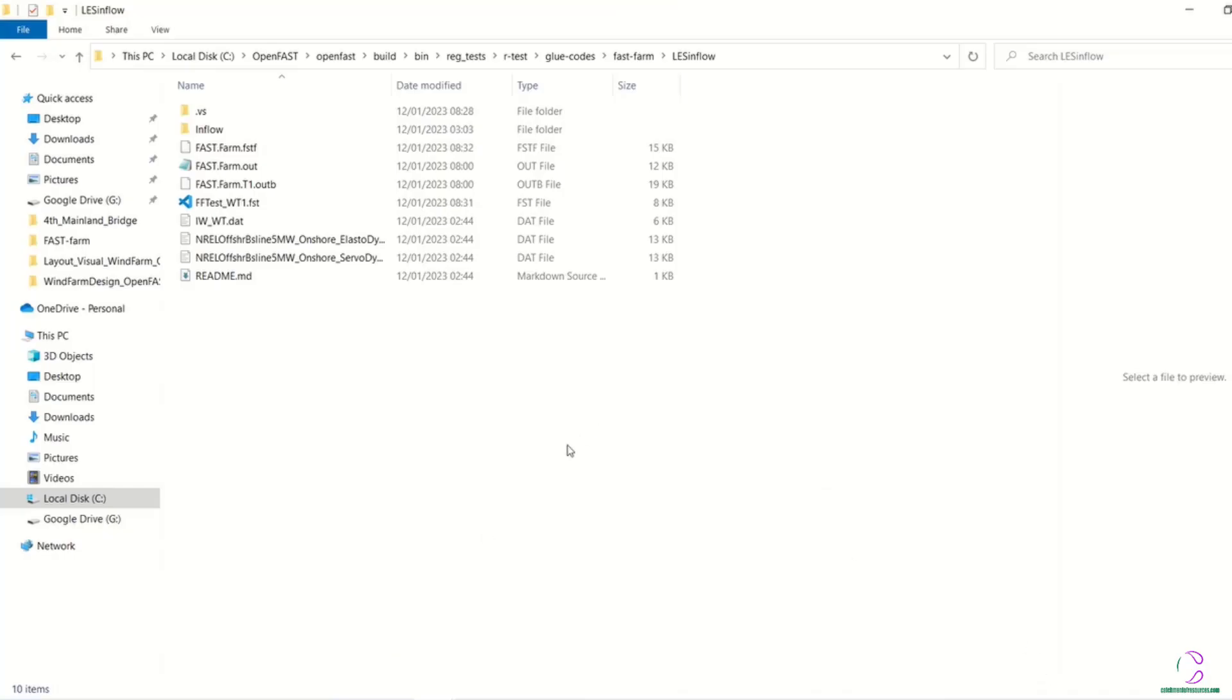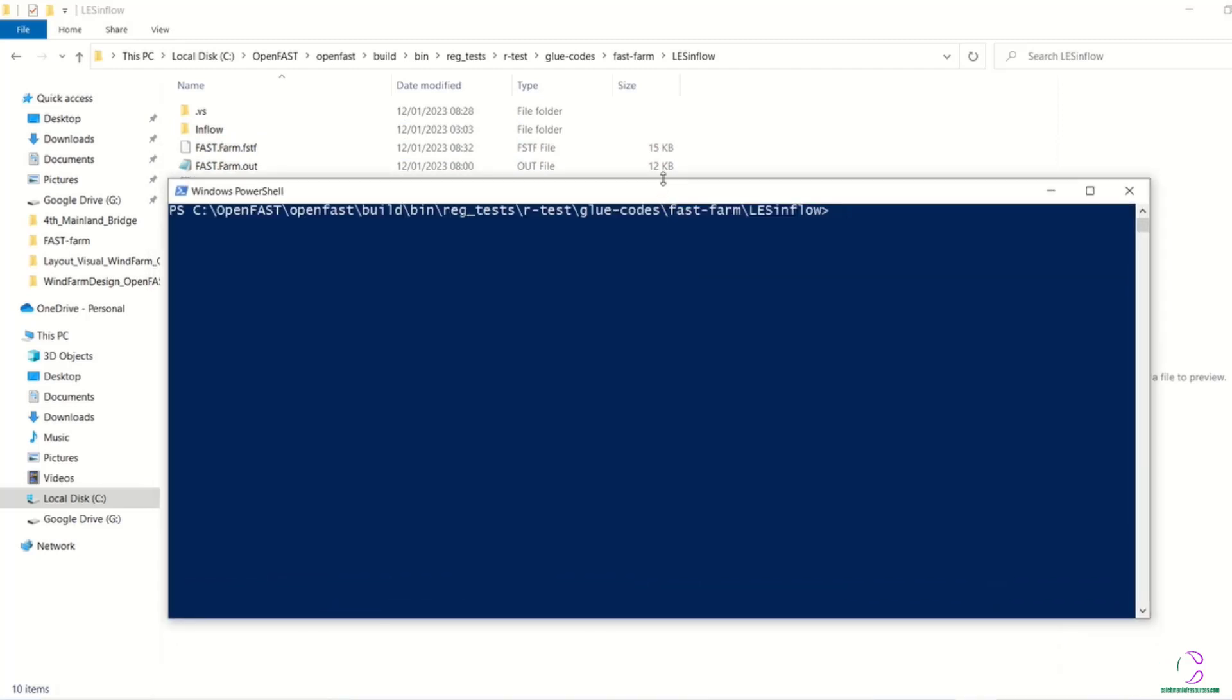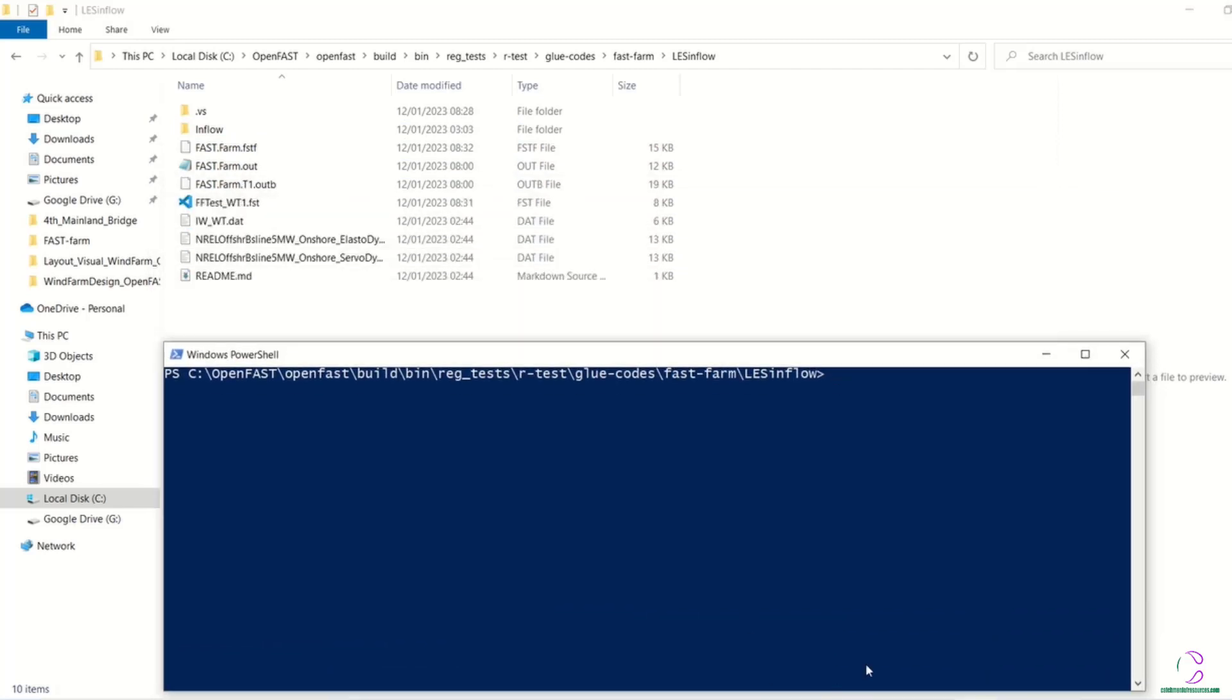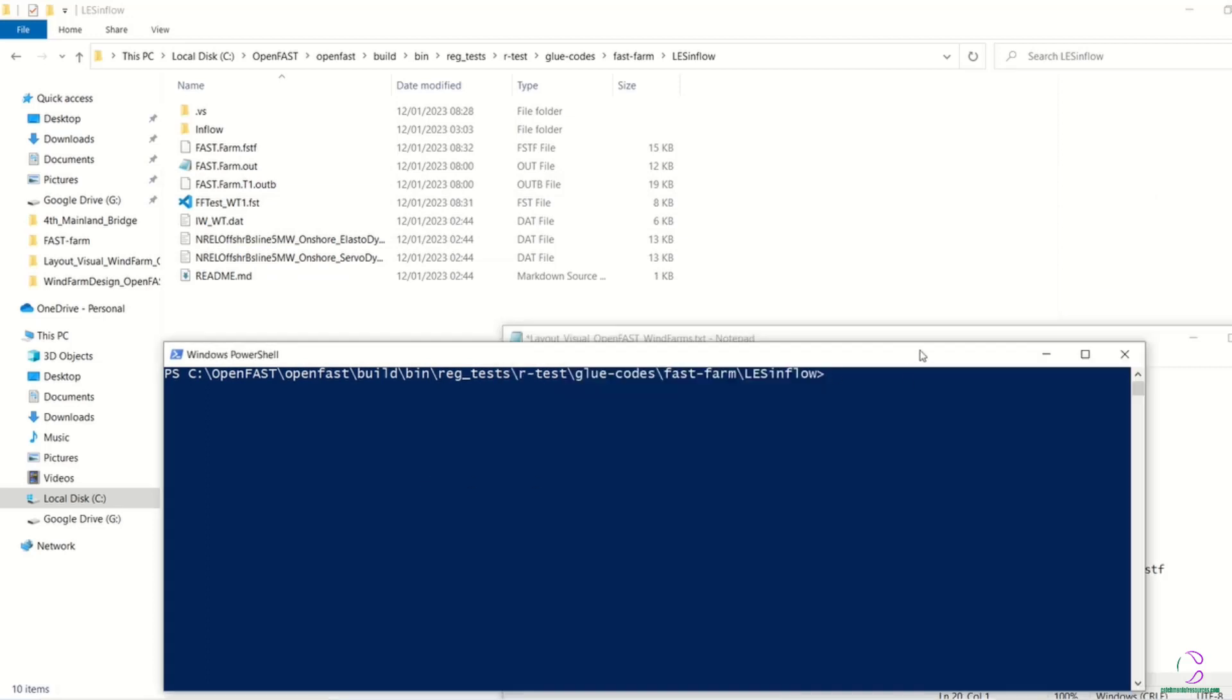So when you run the .fstf file, you actually see two folders created. These folders are the VTK file for the wind turbine as well as the vtk_ff file for the fast farm visualization files.